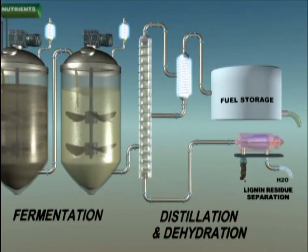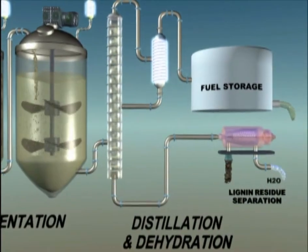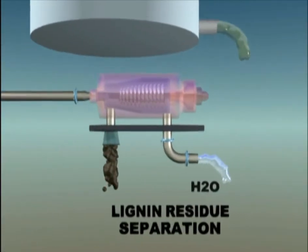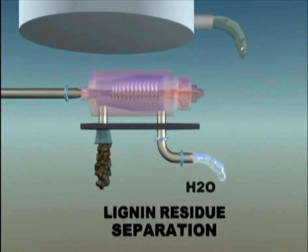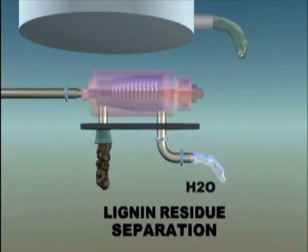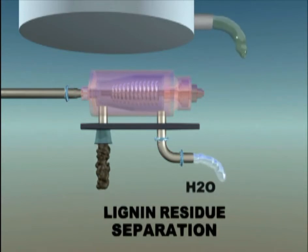The solids and liquids remaining after distillation, known as stillage, then undergo a series of steps to remove water from the mixture. Solid and liquid separation, whether by centrifugation or other means, is used to recover the insoluble lignin-rich residue.